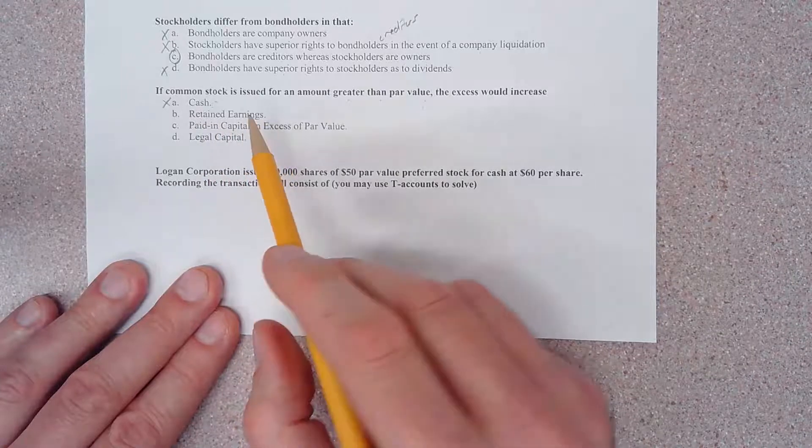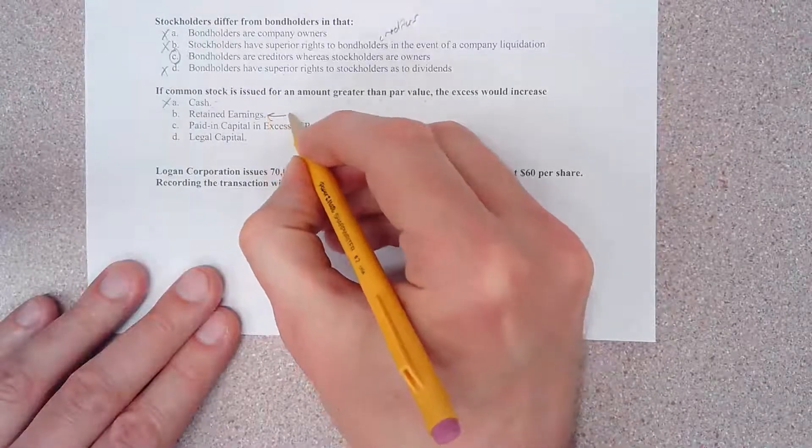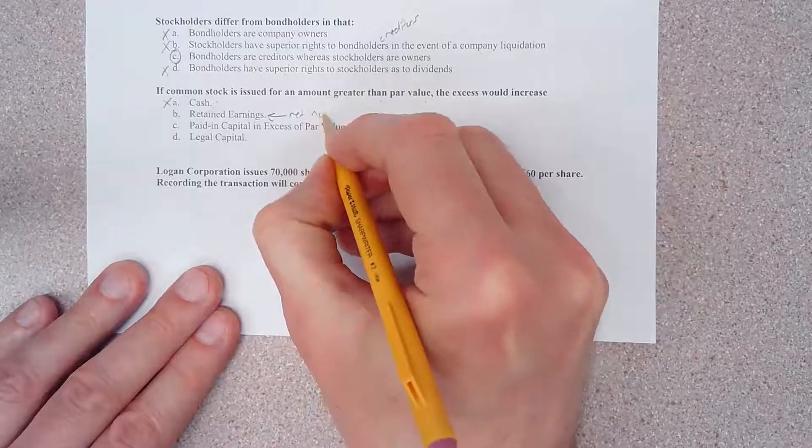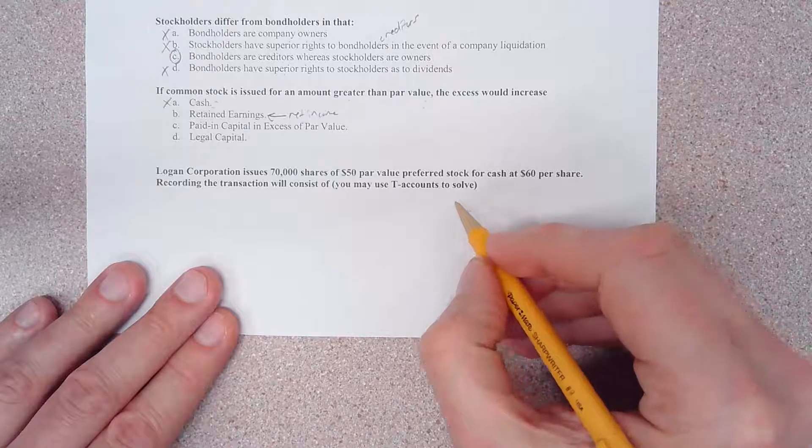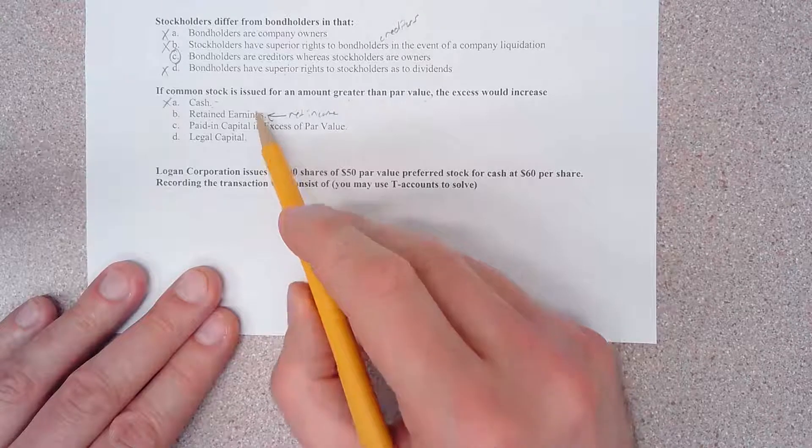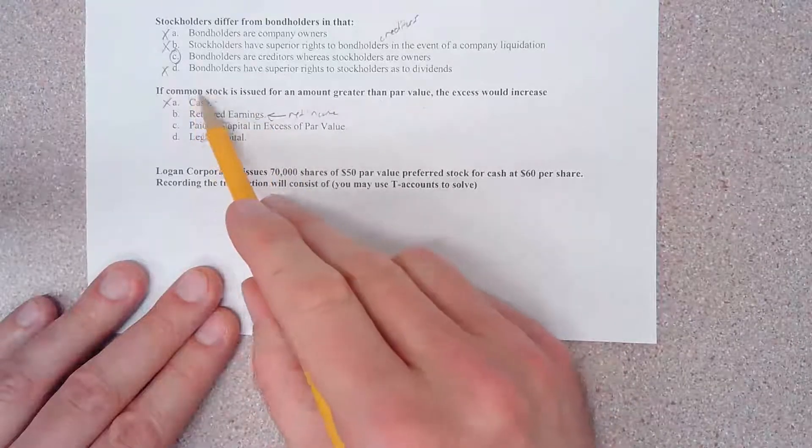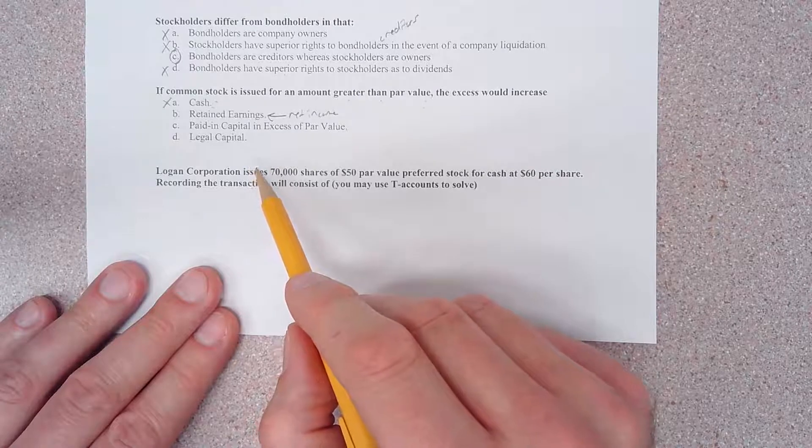Our next choice says retained earnings. Retained earnings come from net income on the income statement. Retained earnings is a component of stockholders' equity, but what we're dealing with when we talk about common stock or preferred stock is the paid-in capital portion of the stockholders' equity section. That is wrong, incorrect answer.